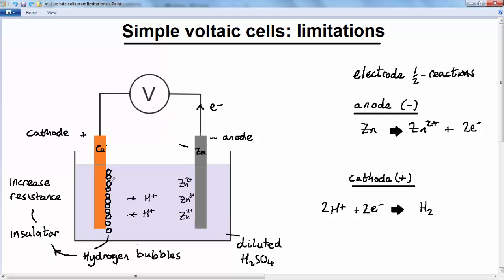So while a simple voltaic cell can quite easily achieve the voltage, because of this hydrogen gas problem, the resistance in the cell rapidly builds up and causes the current to drop.